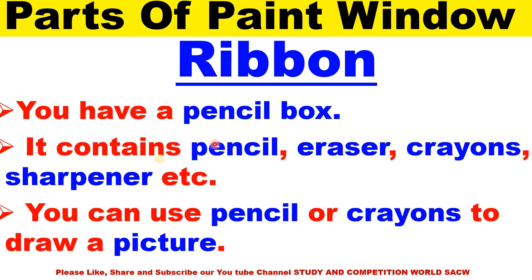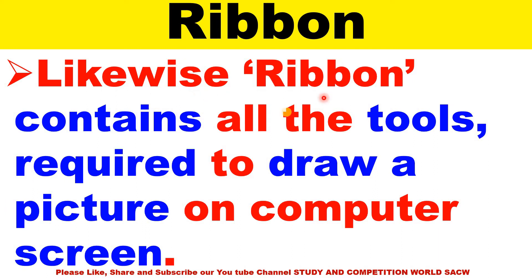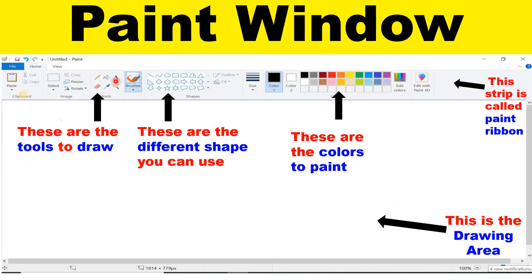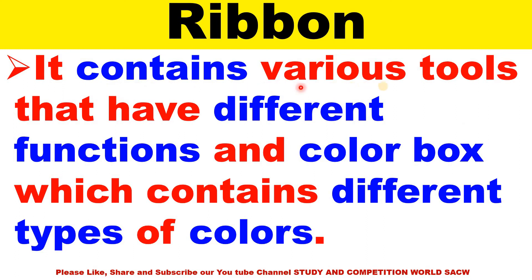What is ribbon? You have a pencil box — it contains pencil, eraser, crayon, sharpener, etc. You can use pencil or crayons to draw a picture. Likewise, ribbon contains all the tools required to draw a picture on the computer screen. It is your computer's pencil box — it contains pencil, eraser, colors, and shapes. It also contains a color box which has different types of colors.